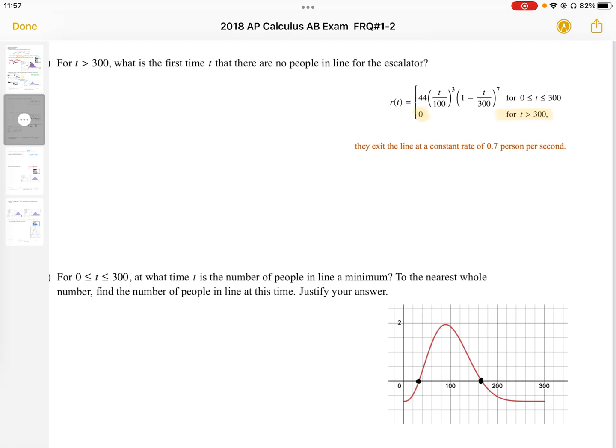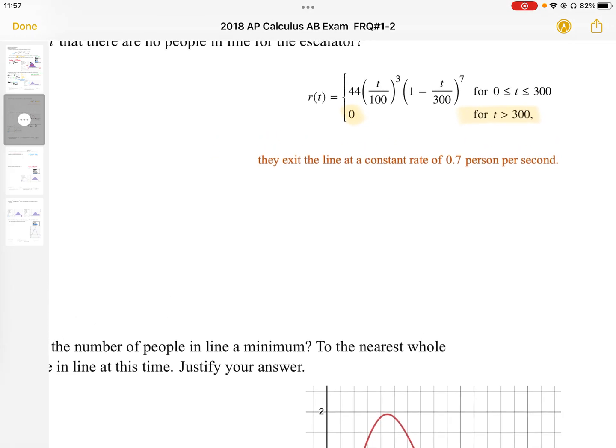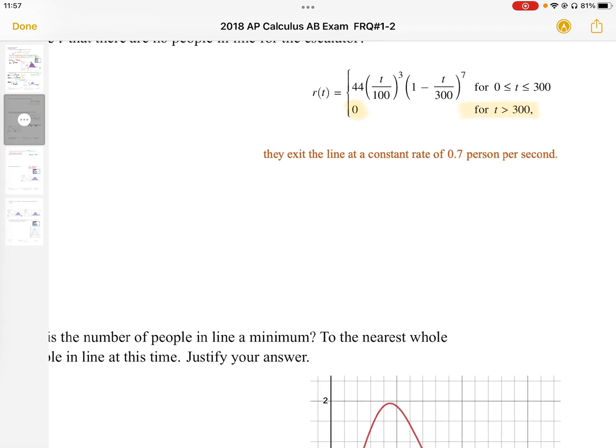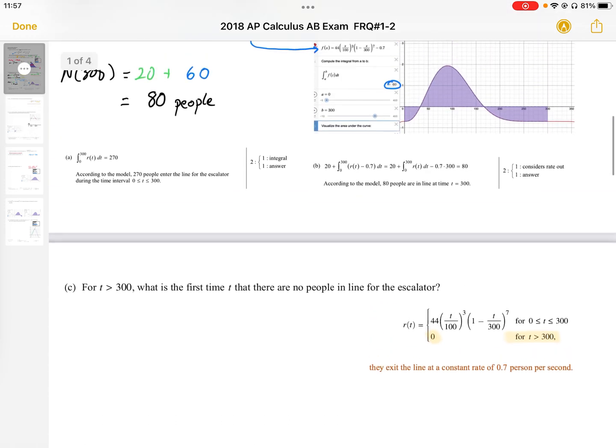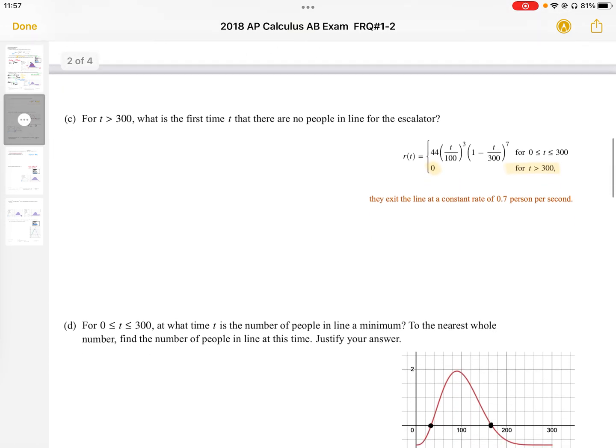So the only thing that's happening is people are exiting the line. From the question, they exit the line at 0.7 persons per second. We've established that the number of people we have at t equals 300 is 80 people, so n of 300 equals 80 people.